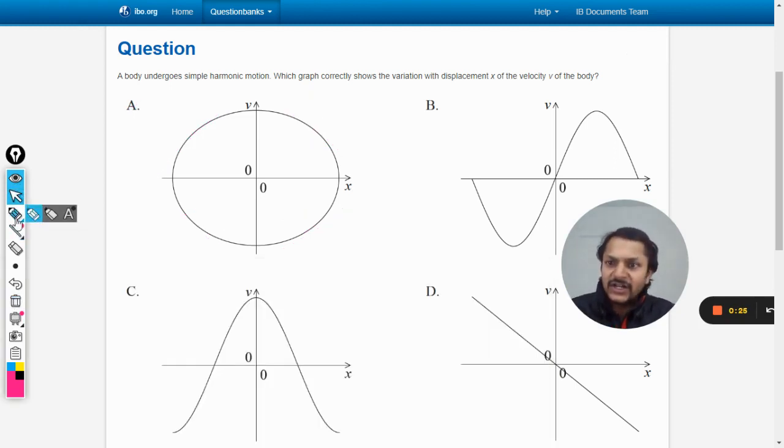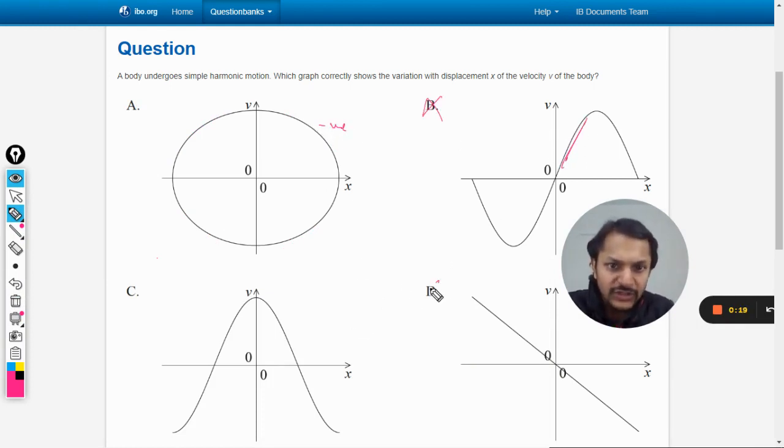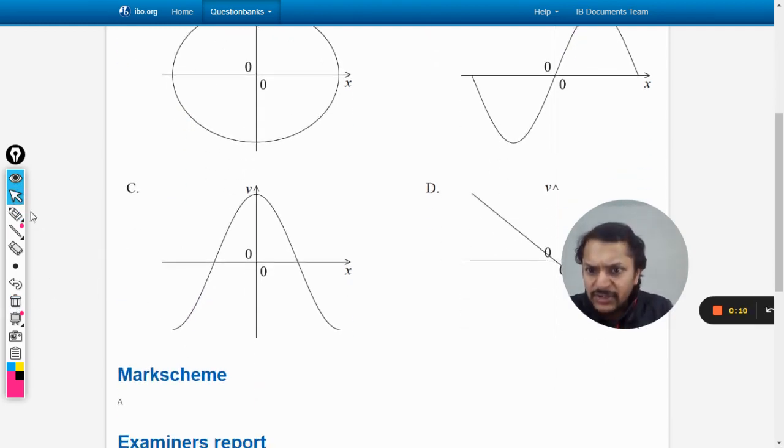As per the graphs are concerned, you can see that here we want the negative slope but here it is positive, so this is ruled out. This is definitely ruled out. And here this has to be the negative slope but here you have the positive, so C is also ruled out. According to the mark scheme, yes, the answer is A.